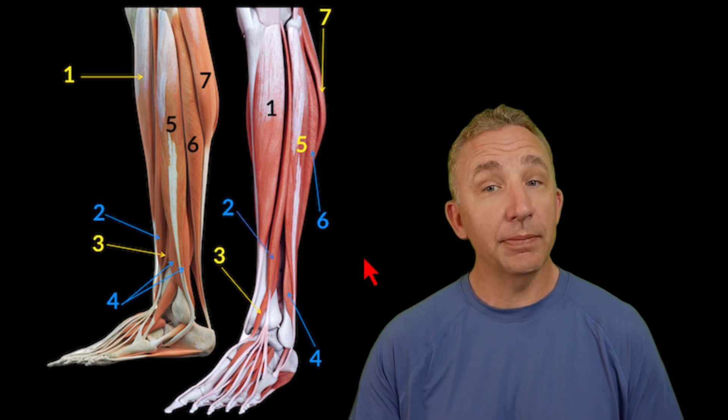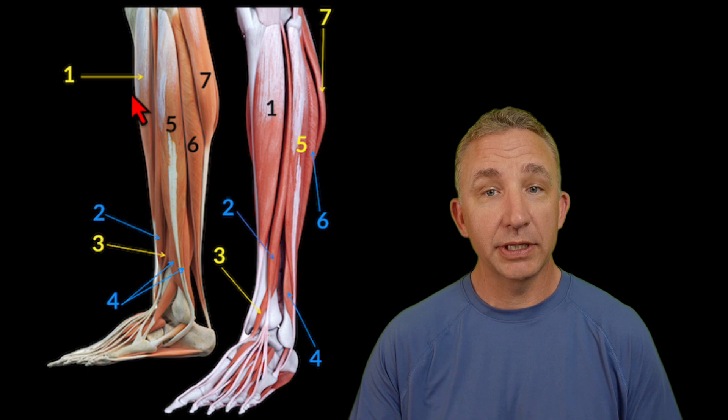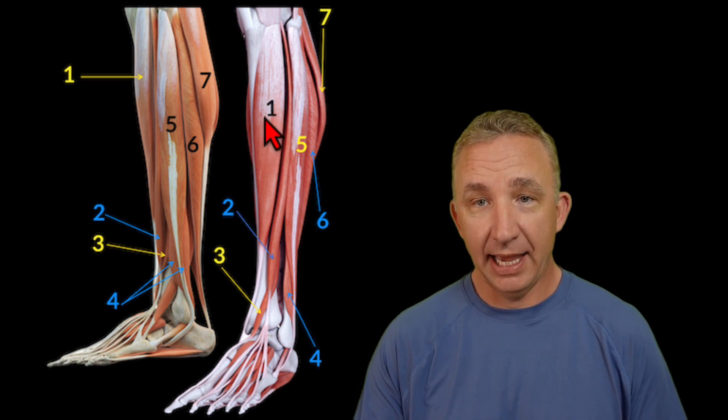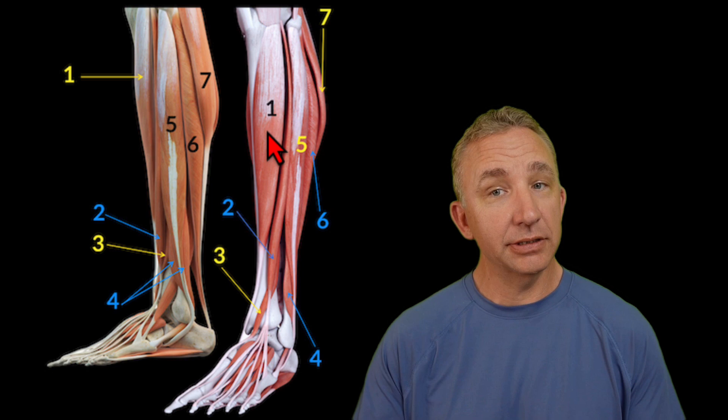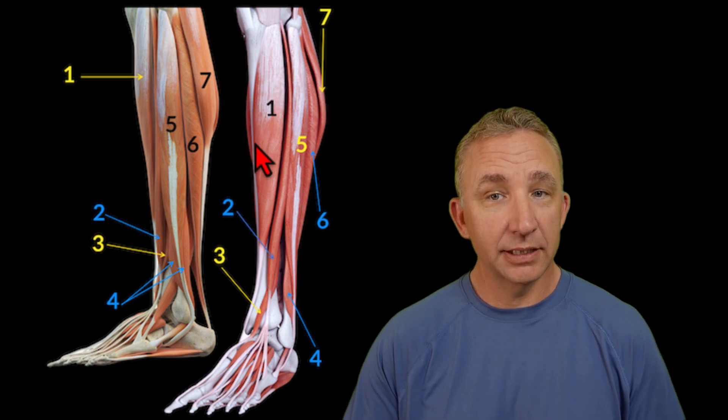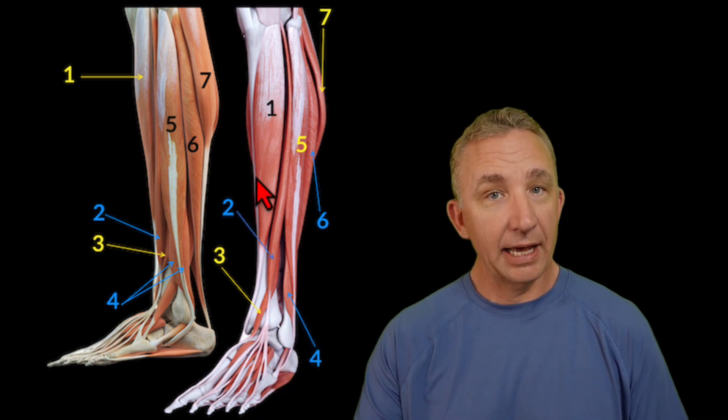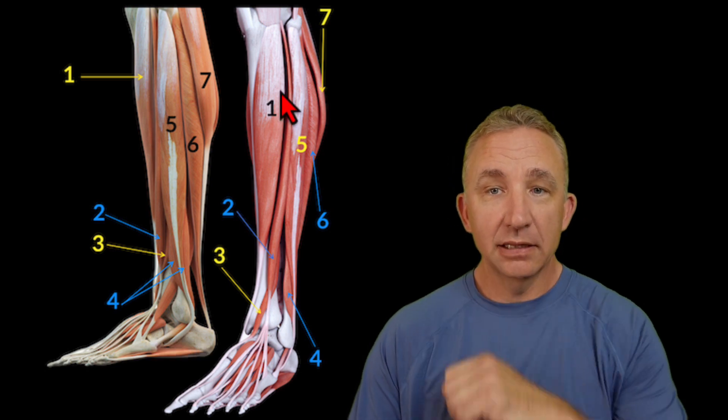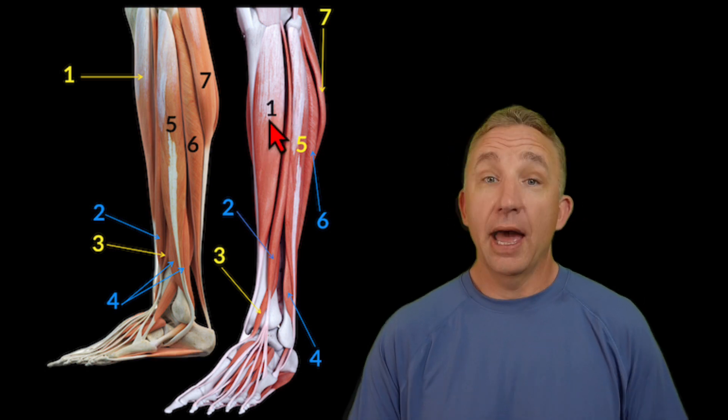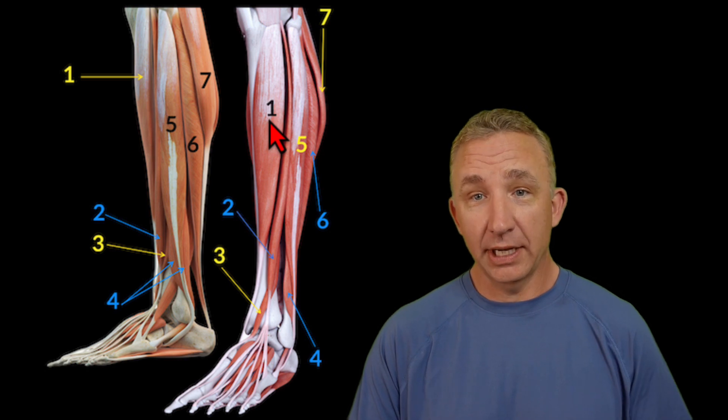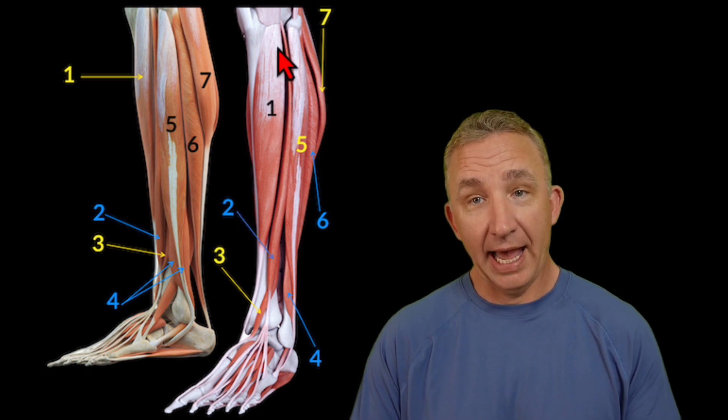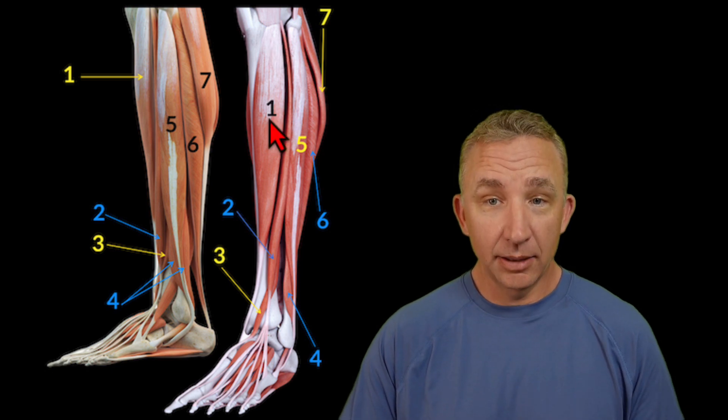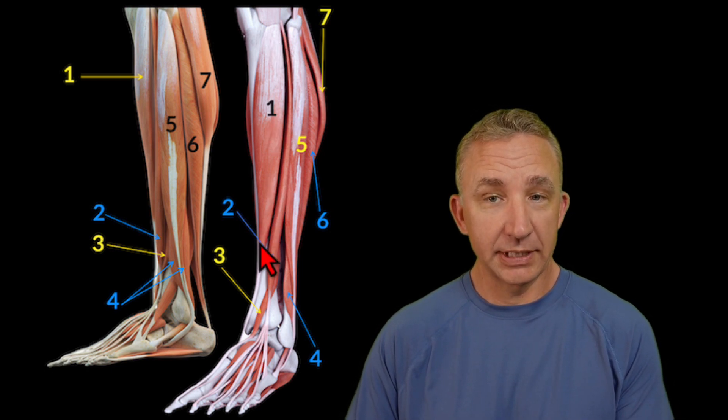So we start, remember this is a left leg, so we start with number one here. Number one is our tibialis anterior because it's on the anterior side, and it's right next to the tibial bone, but on the lateral side of the tibia. And when I look at tibialis anterior, where it's actually going to originate is on the tibia at the lateral condyle, because we're more towards the lateral side, and it comes down to do dorsal flexion for its action.